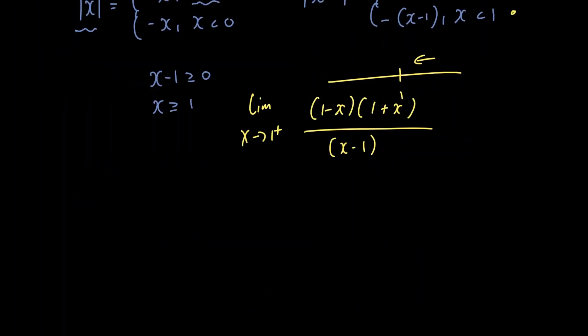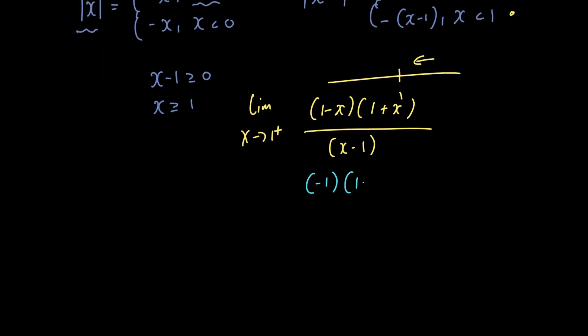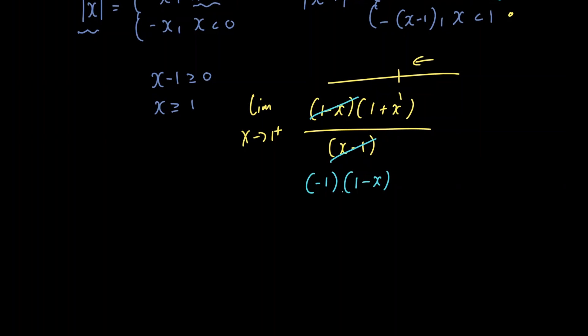Now what we're going to do is factor in minus 1 out of the denominator. So we have minus 1 multiplied by 1 minus x instead of x minus 1. And notice if we do that, the 1 minus x cancels with the 1 minus x here.